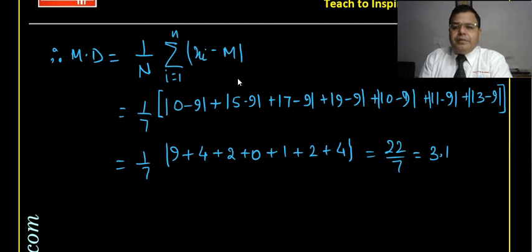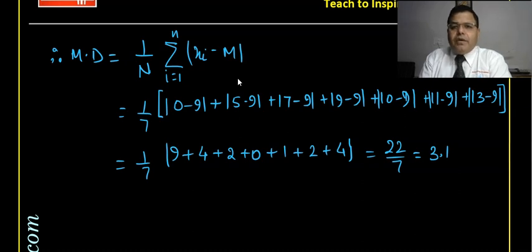Hopefully you understood how to calculate mean deviation about median for ungrouped data. Now the question comes about grouped data. Data can be grouped in two ways: one where simple frequencies are given, and second where class intervals are also given. We will discuss them one by one, but before that let us solve some questions from the exercise to make it clear.